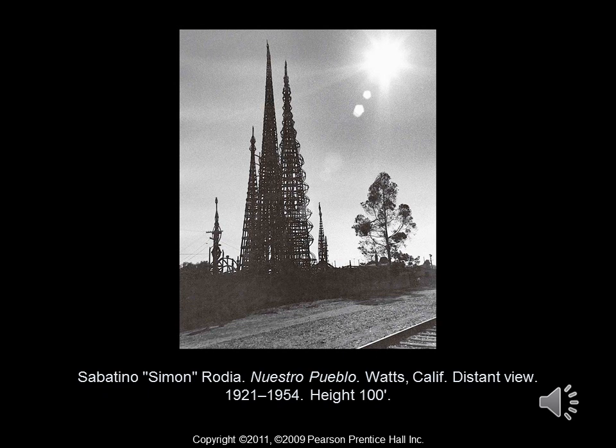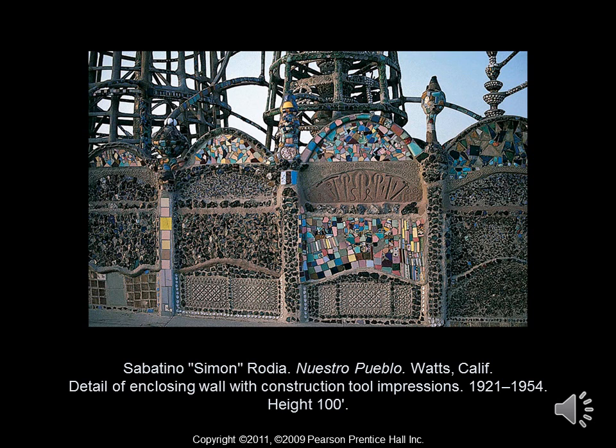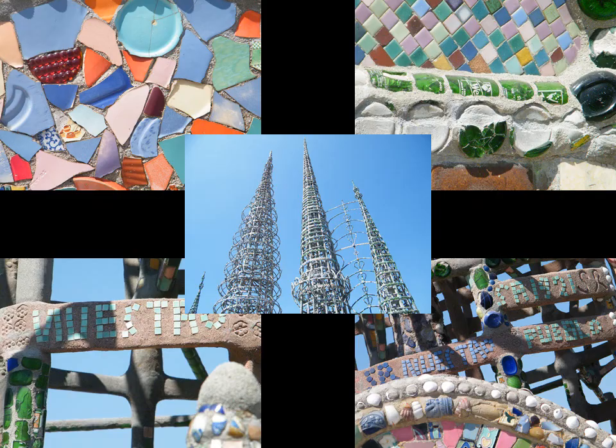This is from Sabatino Rodeo — the Nuestro Pueblo from Watts, California, otherwise known as the Watts Towers. This individual had little to no artistic training whatsoever and felt compelled for about 35 years to just start building things in all sorts of directions. He used bed frames, metal pipes, held together with steel reinforcing rods, mesh, mortar, and also some smaller glass details for mosaics, as seen in the detail of the enclosing wall. These were built from roughly 1921 to 1954.